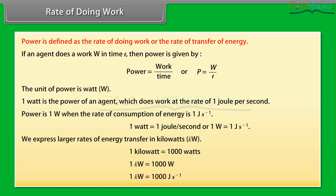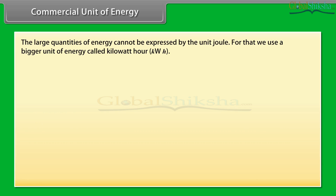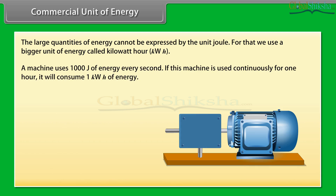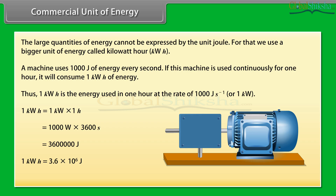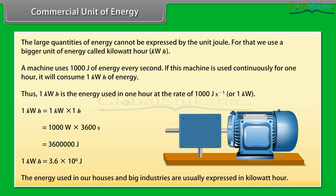Commercial unit of energy. The unit of energy is joule, but large quantities of energy cannot be expressed conveniently in joules, so we use a bigger unit called kilowatt-hour. For example, a machine that uses 1000 joules of energy every second, used continuously for 1 hour, will consume 1 kilowatt-hour of energy. Thus, 1 kilowatt-hour is the energy used in 1 hour at the rate of 1000 joules per second. 1 kWh = 1 kW × 1 h = 1000 W × 3600 s = 3.6 × 10⁶ joules. The energy used in homes and industries is usually expressed in kilowatt-hours.